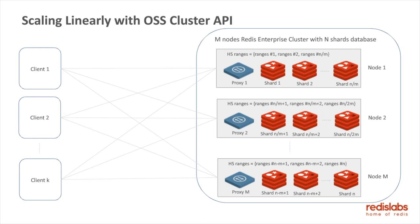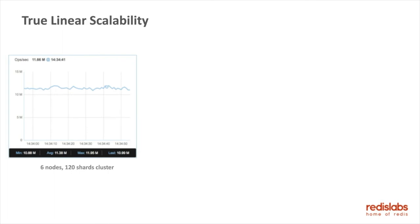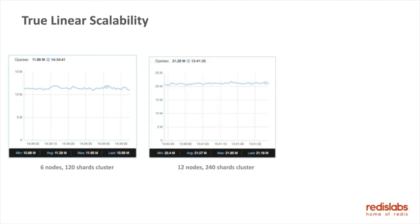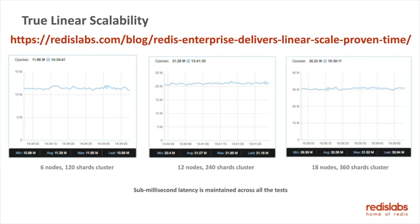We've tested linear scalability quite thoroughly. In a six-node cluster with 120 shards, we get up to 11 million operations per second, all sub-millisecond latency. With reasonable pipelining — nine operations per request — if we go from six nodes and 120 shards to 12 nodes and 240 shards, we get 20 million operations per second, still sub-millisecond. At 18 nodes we get 30 million operations. And in our latest benchmark, with 26 nodes, we achieve 50 million operations per second at sub-millisecond latency.